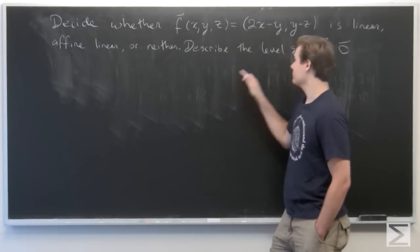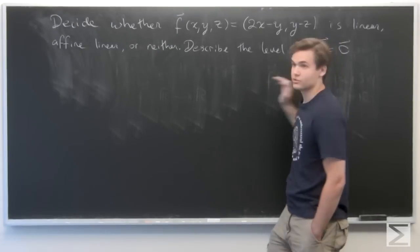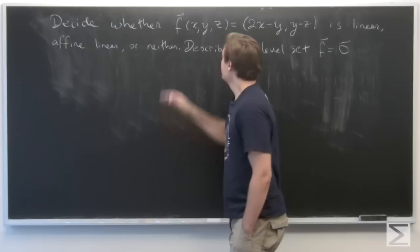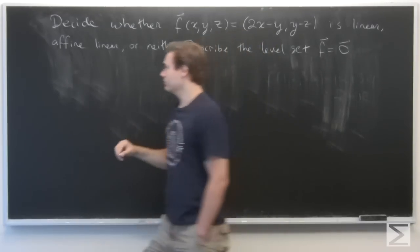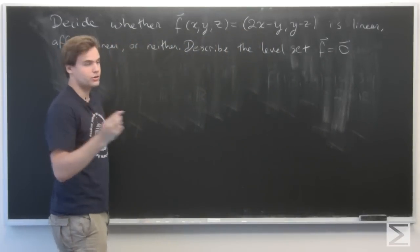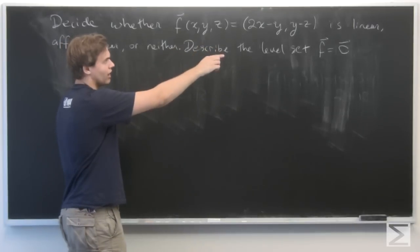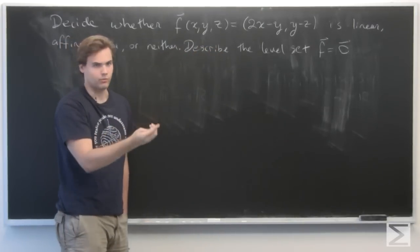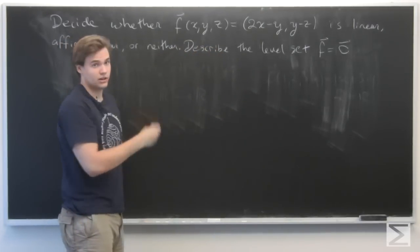And after that, we want to describe what the level set of f equals 0 looks like. So, first off, recall that a function into R^n where n is greater than 1 is linear if it's linear in each component function.